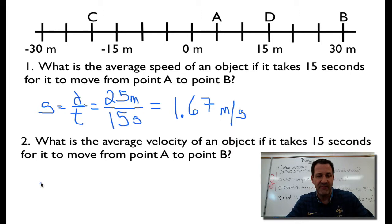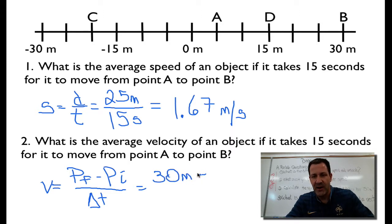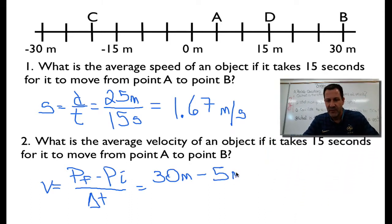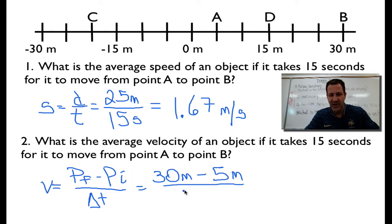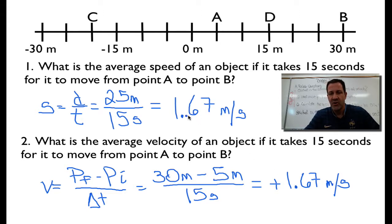Now let's find the velocity. Velocity is position final minus position initial, divided by the change in time. We don't really care what happened in between. We know it went from A to B, so B is at 30 meters minus the initial position of 5 meters, divided by 15 seconds. This gives us a positive number — positive 1.67 meters per second. Here we specified it went in the positive direction, whereas with speed we didn't know the direction.